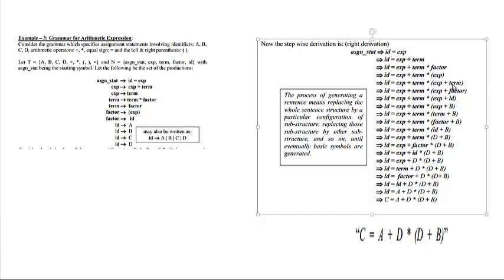We will convert term into factor because we want an ID here. Term is equal to factor, and factor is equal to ID, so we write ID. Coming from right to left, we write ID = B, because B is the identifier in this part of the expression. Now we convert expression into term, then term into factor, then factor into ID, and ID = D.